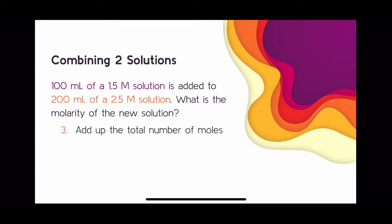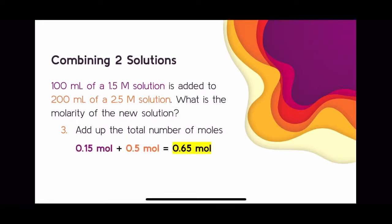The next step is to add up the total number of moles in both the purple and orange solutions — just take your answers from the previous step and add them together. Adding 0.15 moles and 0.5 moles gives a total of 0.65 moles. I highlighted this in yellow because it's important and you'll use it in the final calculation.